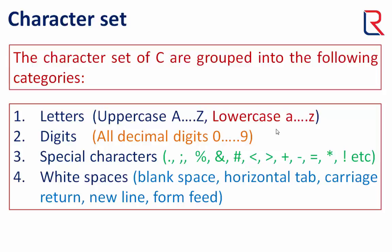White spaces include blank space between words and characters, horizontal tab which is generally six to eight characters' space, carriage return which means moving the cursor to the beginning of the line, new line which means starting a new line from any particular point in the output, and form feed which is an ASCII control character that forces the printer to eject the current page and continue printing at the top of another page.